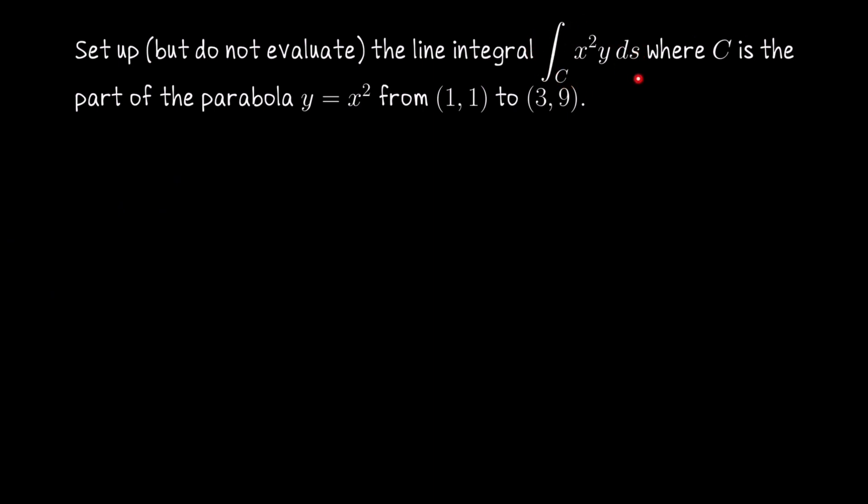This is a scalar line integral. What we need to do is parametrize the curve C, rewrite our integrand in terms of the coordinates of the parametrization, multiply by the speed of the parametrization, and then we'll have everything we need to set up.